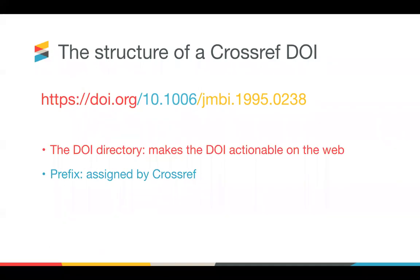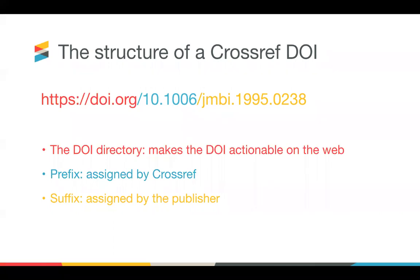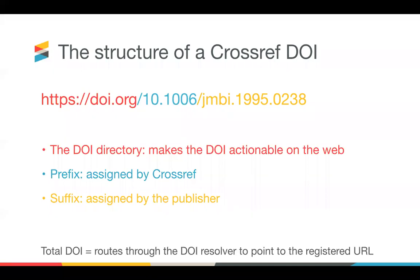Some members have one publication, some have multiple, and one prefix may be used to register all of your content, even if you publish different types — books and journals, for example. Finally, the suffix is the part of the DOI assigned by the publisher, and it is unique to each content item. Each member has a unique publishing schedule — this could be weekly, monthly, or yearly — and DOIs can be registered at any time. The total DOI routes through the resolver to point to the registered URL.